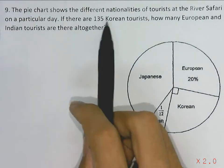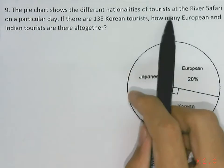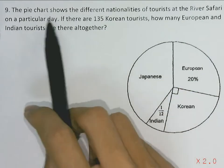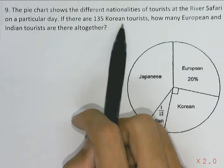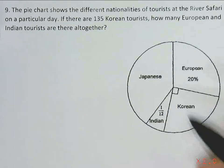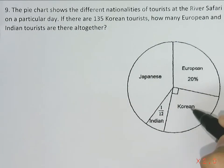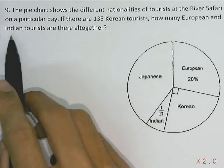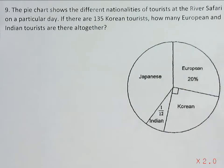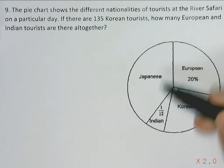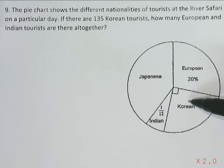The pie chart shows the different nationalities of the tourists at the river safari on a particular day. If there are 135 Korean tourists, how many European and Indian tourists are there altogether? We notice that the Korean segment has a 90-degree angle, which means it is one quarter of all the tourists.